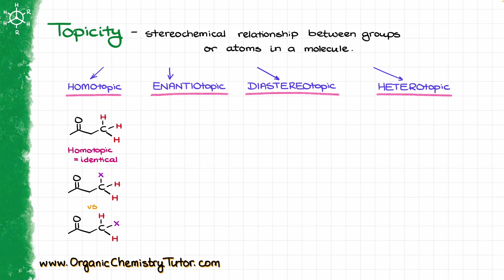For illustration purposes, let's say I replace the top hydrogen in my first molecule with an X, and the middle hydrogen in the second molecule with the X. As we analyze these two molecules, we can see that there is absolutely no difference between them. If that X was a bromine or OH group or anything else, that would not make different molecules. Because of that, those hydrogens are identical to each other, and we refer to those as homotopic hydrogens.